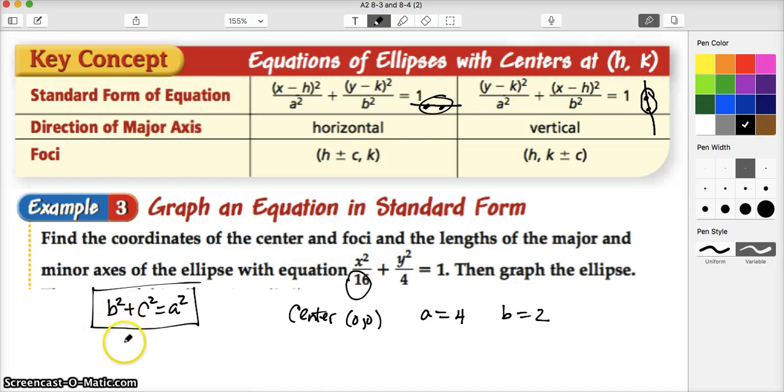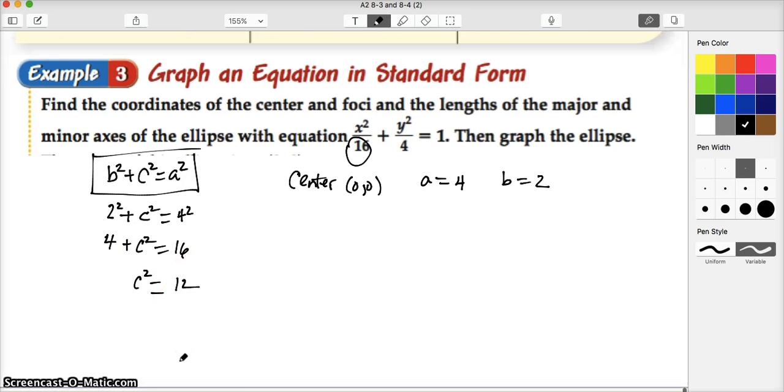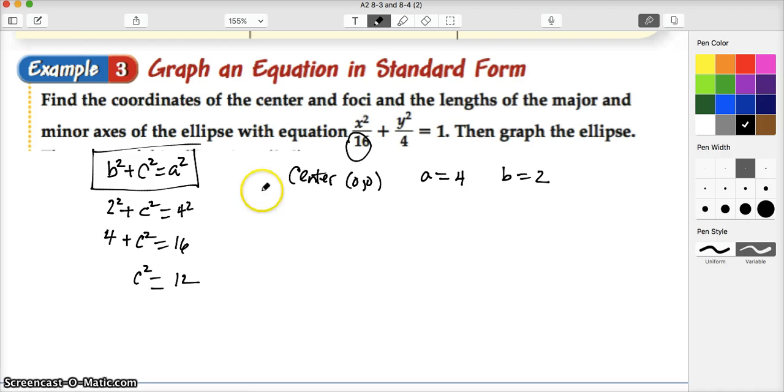So let's go ahead and calculate that. So I have two squared plus c squared equals four squared. So four plus c squared is equal to 16. With a little bit of algebra, I can see that c squared is equal to 12. And therefore, c is equal to the square root of 12. And we can simplify that by writing that as four times three, or two root three, if you remember simplification of radicals.